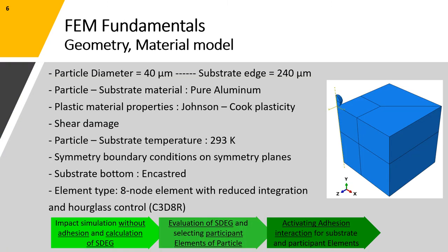Particle diameter is assumed to be 40 micrometers and substrate edge is assumed to be 240 micrometers long. Both of them are considered to be made of pure aluminum. The plasticity of the material is modeled using Johnson-Cook plasticity and the shear damage is integrated in the material model. Both of the particle and substrate are assumed to have a temperature of 293 degrees Kelvin and when applicable, symmetry boundary conditions are applied on relevant surfaces. For 3D models, eight node element with reduced integration and hourglass controls are applied both for sphere and the substrate.